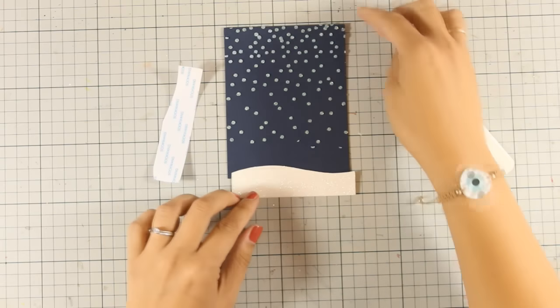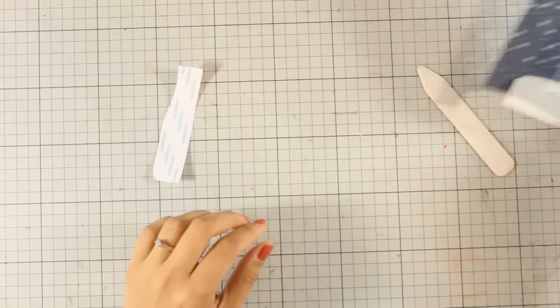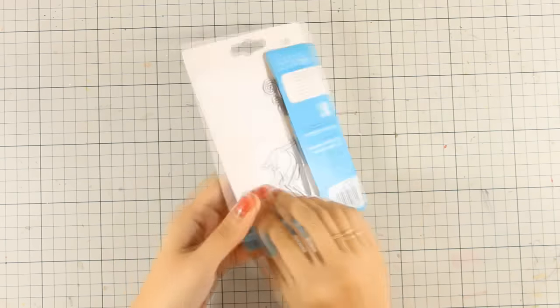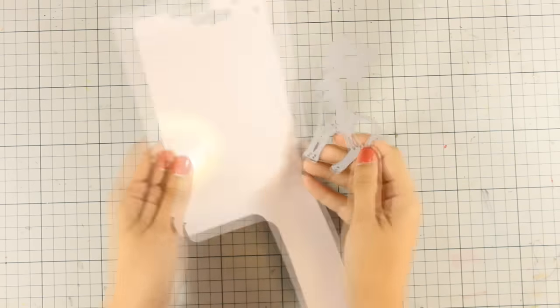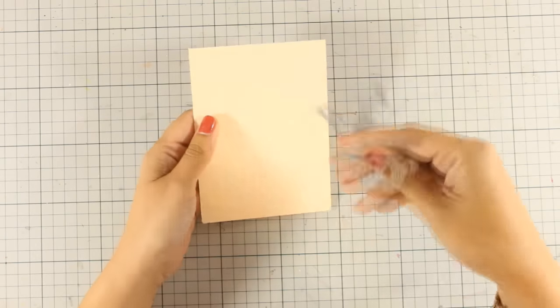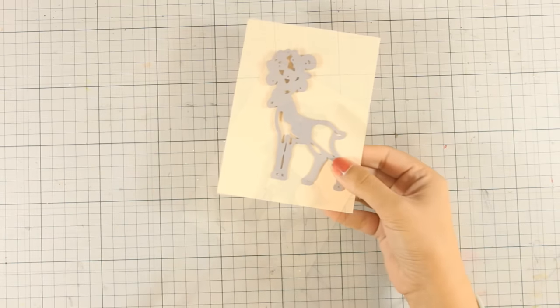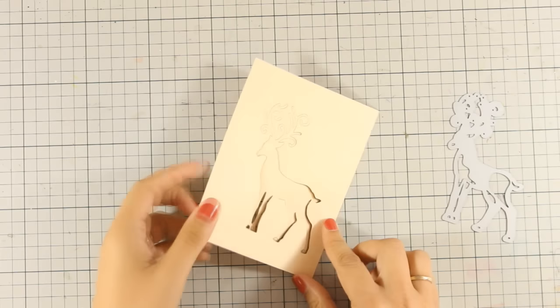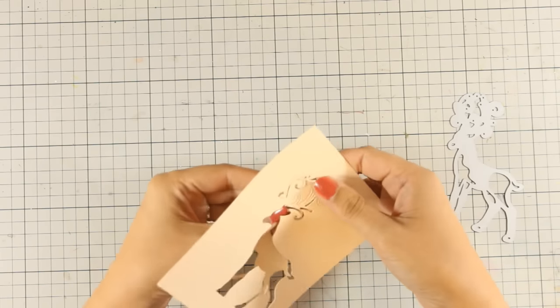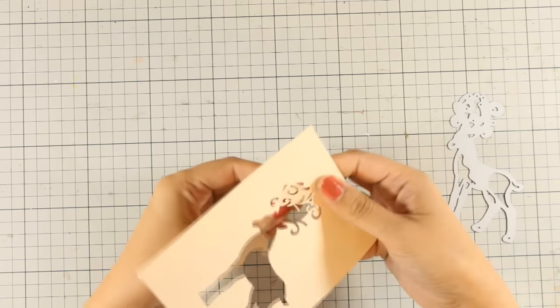Now I'm going to put those aside and work on my focal point for today. This is a reindeer metal die by Tonic and I'm going to use it as my focal point and especially as an example so that I can show you a third way to apply glitter with a different product. I have used my die cutting machine to cut out the reindeer and as my base I use this manila cardstock.